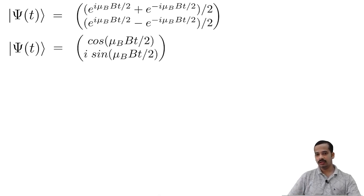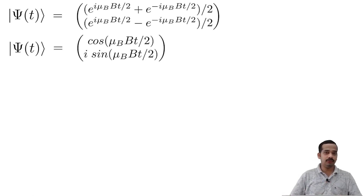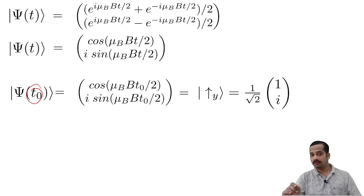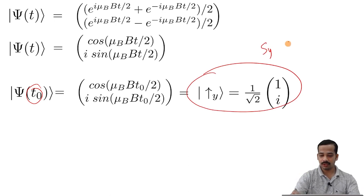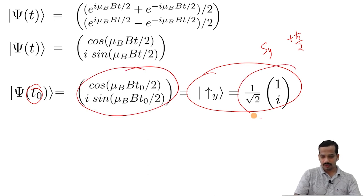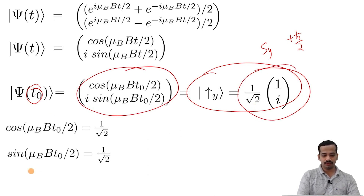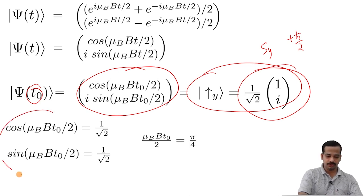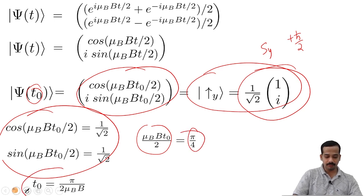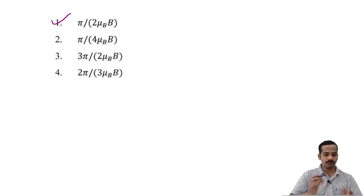Now read the question carefully. After some time t0, the state equals the eigenstate of S-y with eigenvalue plus h-bar by 2, which is (1 by root 2)[1, i]. Equating the two column vectors: cos(theta) equal to 1 by root 2 and sin(theta) equal to 1 by root 2, where theta equals mu-B B t0 by 2. The minimum value of theta for which both conditions hold is theta equal to pi by 4, giving t0 equal to pi by 2 mu-B B. Therefore option 1 is the right answer.